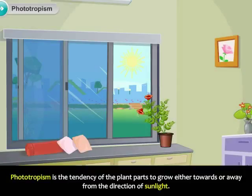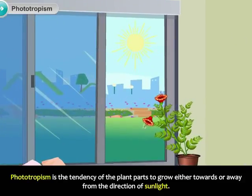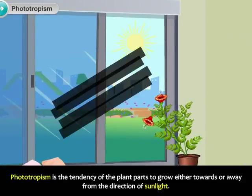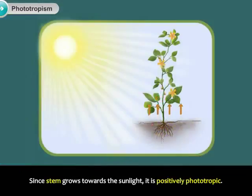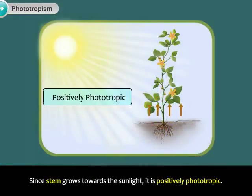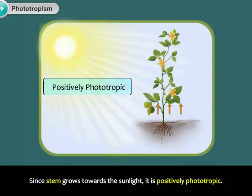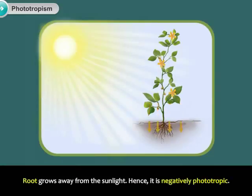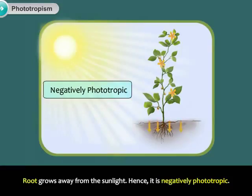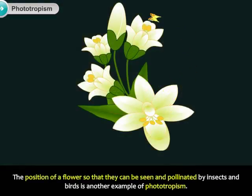Phototropism is the tendency of the plant parts to grow either towards or away from the direction of sunlight. Since the stem grows towards the sunlight, it is positively phototropic. The root grows away from the sunlight; hence, it is negatively phototropic. The position of a flower so that it can be seen and pollinated by insects and birds is another example of phototropism.